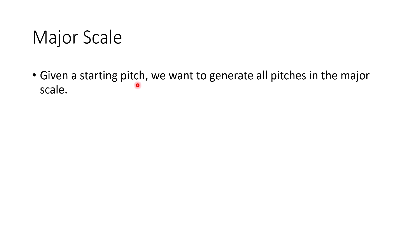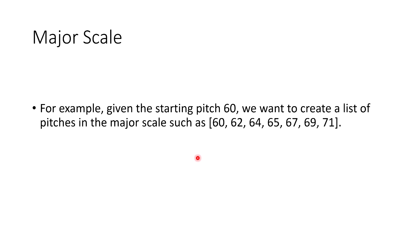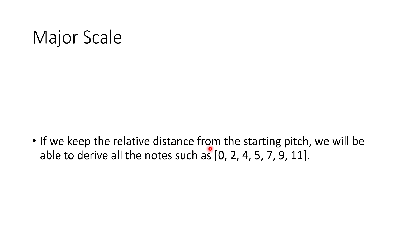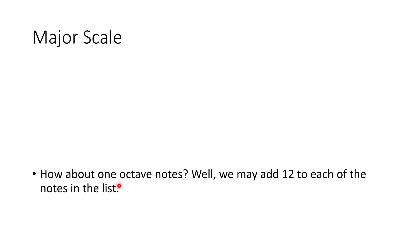We use this distance array to generate all the notes. Given a starting pitch, we want to generate all pitches in the major scale. For example, given starting pitch 60, we create a list: 60, 62, 64, 65, 67, 69, 71. The relative distances are 0, 2, 4, 5, 7, 9, 11. So 60 plus 0 is 60, 60 plus 2 is 62, 60 plus 4 is 64, and so forth. For one octave higher or lower, we simply add or subtract 12.